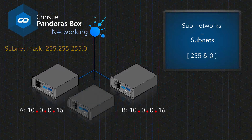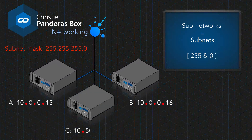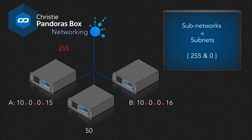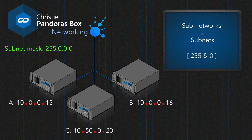If we add a third computer C with the IP address 10.50.0.20, it would not be able to reach the other machines using a subnet mask of 255.255.255.0, because the second 255 requires the 0 and the 50 to be the same, while in this example they differ. We can solve this by using a more open subnet mask — 255.0.0.0. Now the second number is masked with a 0, denoting that this number may differ and machines are still considered to be on the same network.